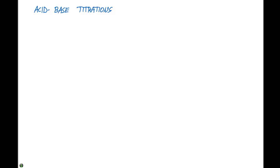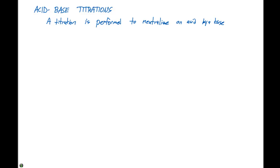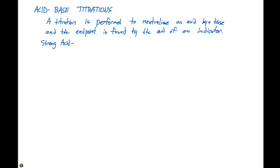In this video, we're going to look at acid-base titrations. A titration is performed to neutralize an acid by a base, and the end point is found by the aid of an indicator. Acid-base titrations are a staple in the general chemistry lab. The first calculation we're going to look at is going to involve a strong acid, strong base titration.